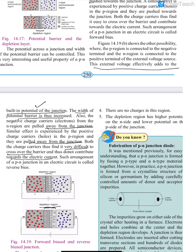To summarize: what is forward bias? In forward bias, the P region is connected to the positive terminal and the N region is connected to the negative terminal. The barrier is reduced, and the charge carriers find it easy to cross the barrier.